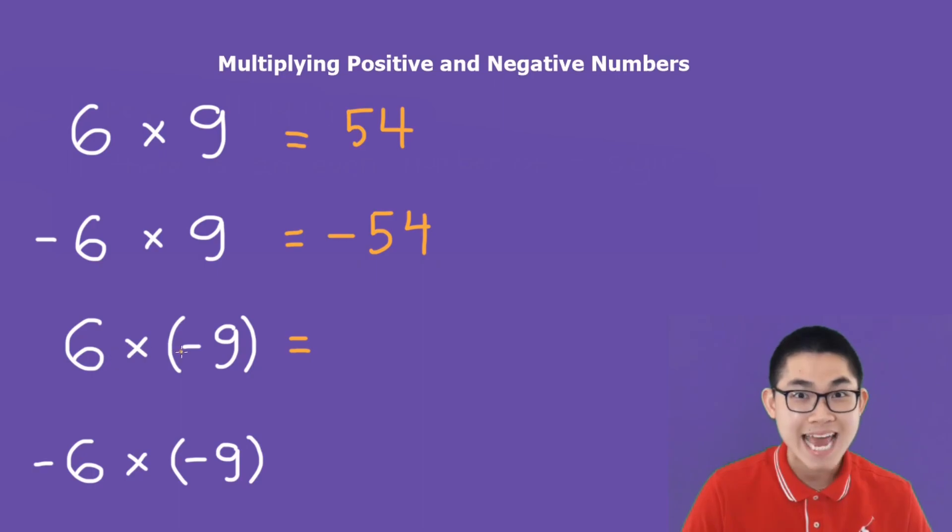6 times negative 9 will also be negative 54, because there is only one negative sign. Last but not least, what is negative 6 times negative 9? Here, there are 2 negative signs, which is an even number of negative signs. So the answer will be positive.